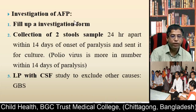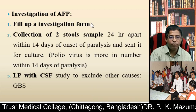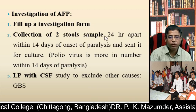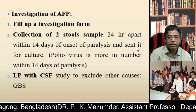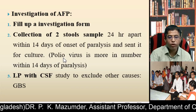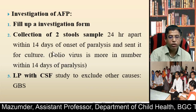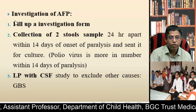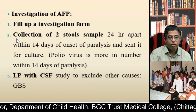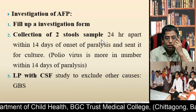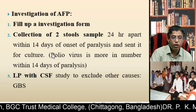How can you investigate Acute Flaccid Paralysis? Fill up an investigation form and collect two stool samples 24 hours apart within 14 days of onset of paralysis, and send them for culture. Poliovirus is more numerous within 14 days of paralysis, so stool is collected within 14 days. When you get an Acute Flaccid Paralysis case, first collect two stool samples 24 hours apart within 14 days of onset to exclude poliomyelitis.